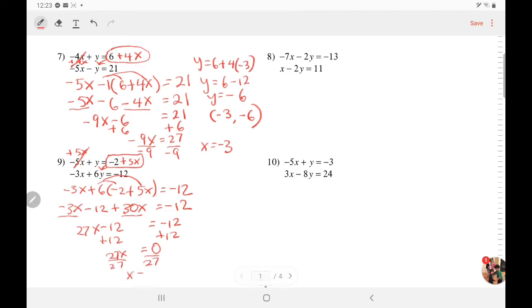Divide by 27. x is 0. Plug it back into where you circled. So y equals negative 2 plus 5 times 0 which is 0. So y is negative 2. Present your answer 0, negative 2.